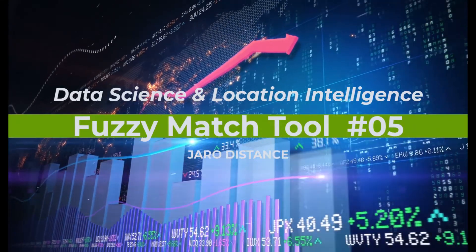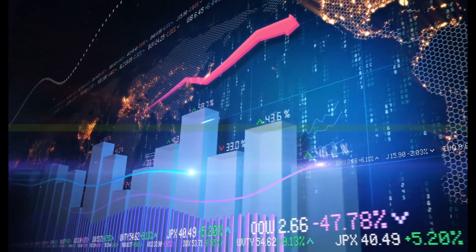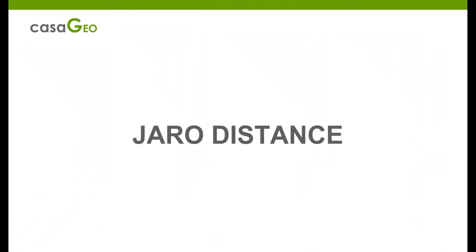Hello, my name is Tazen from Casa Geo, the data science and location intelligence company with part 5s on the fuzzy match tool. In this video we look at Jaro.